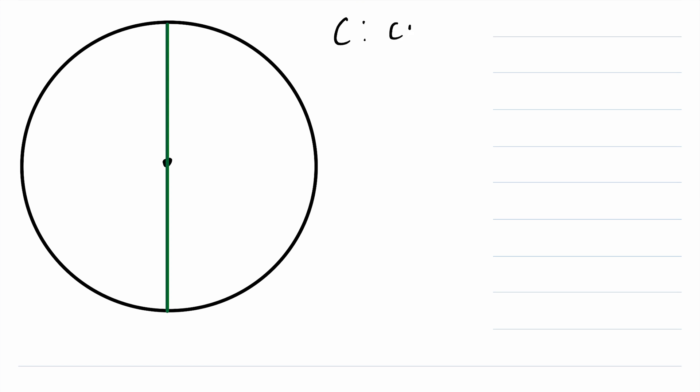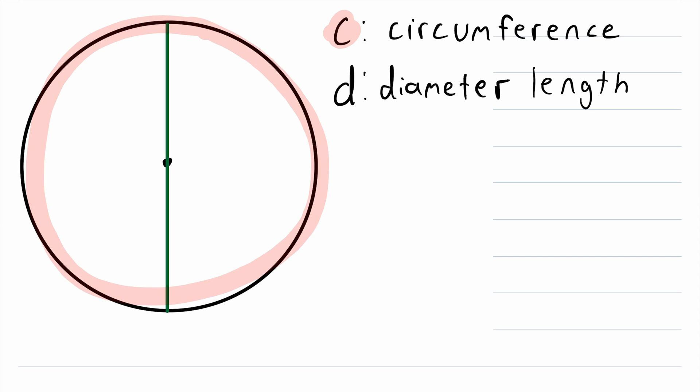For this lesson, we'll let C represent the circumference of the circle, and we will let D represent the diameter or the diameter length of the circle. So C is the circumference, the distance around the circle, and D is the diameter length of the circle. And we're trying to find the circumference from the diameter length.